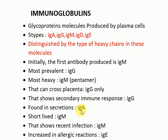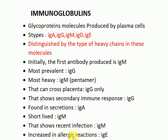The antibody found in secretions like saliva, mucus, tears, and milk is IgA. The most short-lived antibody is IgM — whenever IgM is detected in a titer, it indicates a recent infection because IgM is short-lived. The antibody increased in allergy or allergic reactions, such as type 1 hypersensitivity, is IgE.